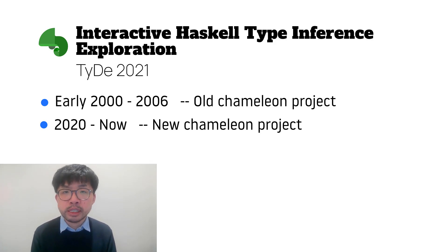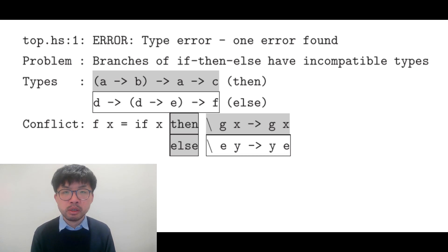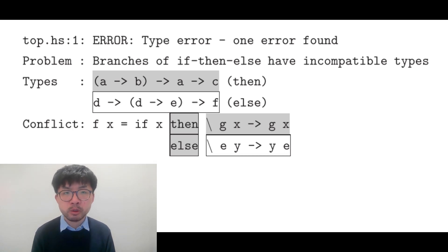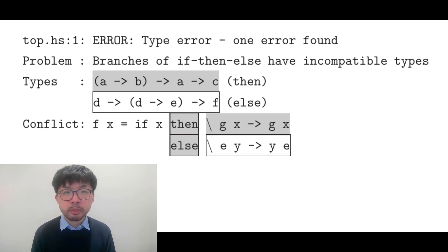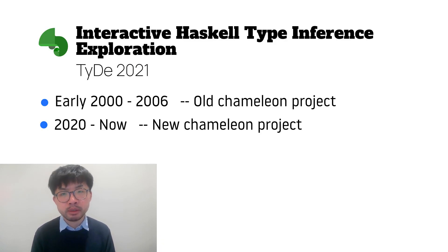The original Chameleon team started this project in early 2000. At that time, Chameleon was a command-line tool. The main promise of the Chameleon project was to assert types using constraints and constraint-handling rules generated from program syntax. It has its own limitations, but I believe it informs some important merits of constraint-based type systems.